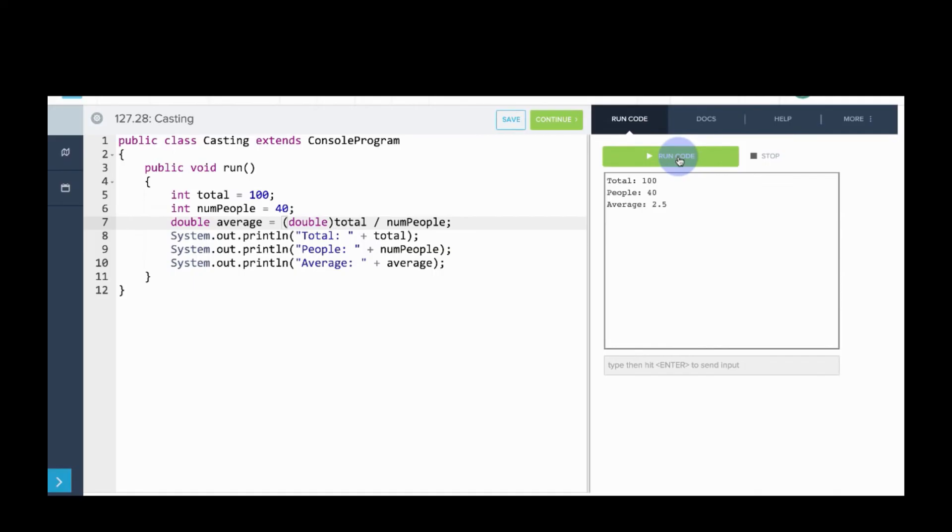So there you go, we can see the average is now 2.5, which is what we're expecting. Additionally, you can note that we could also cast numPeople as a double and we'd still get the correct result. So that's how you use casting.